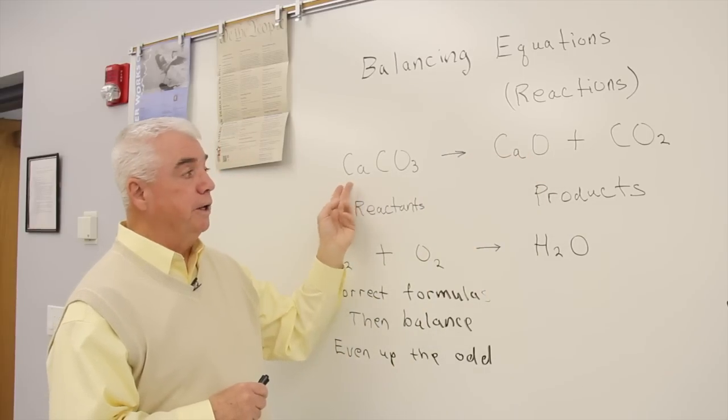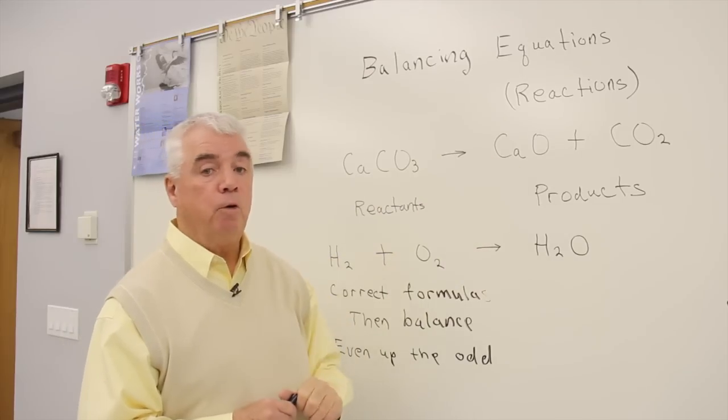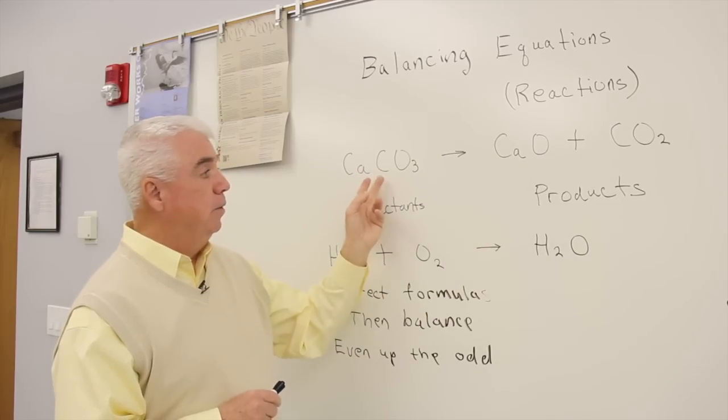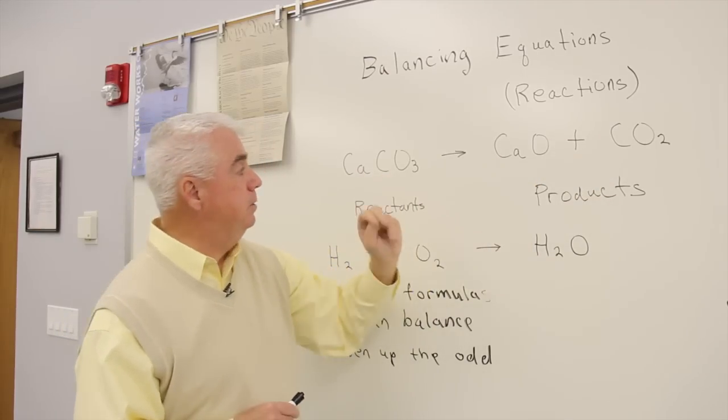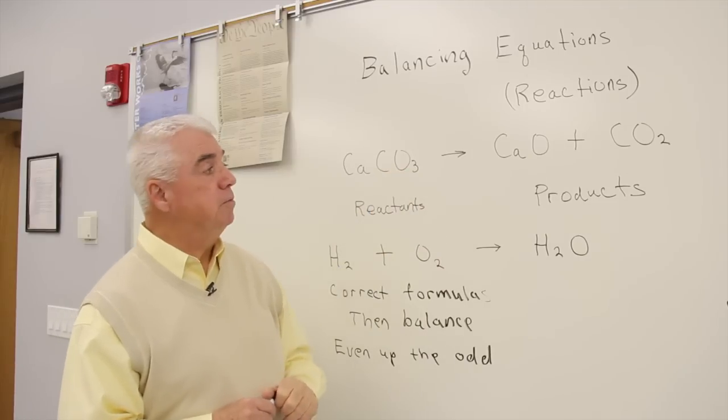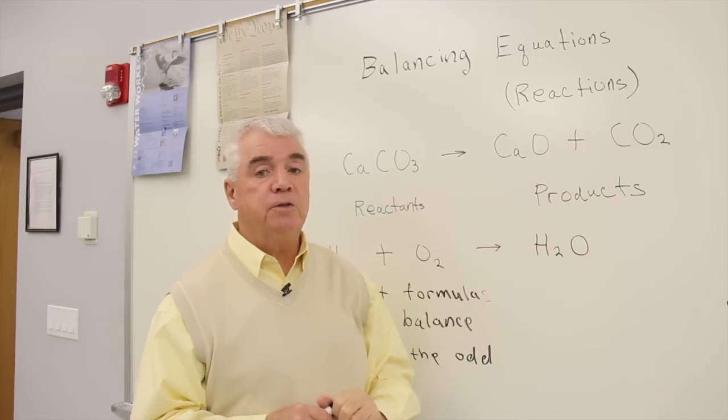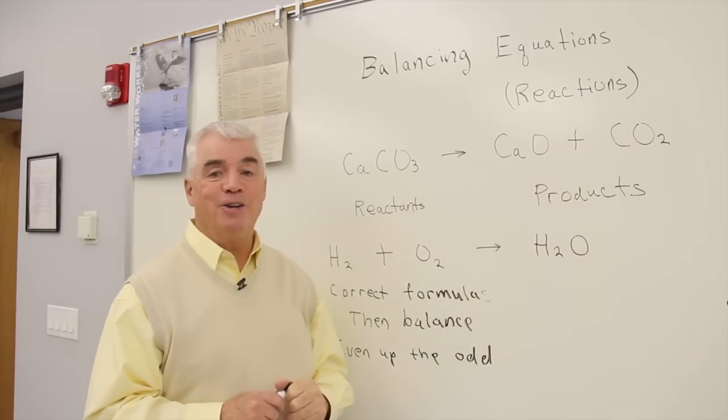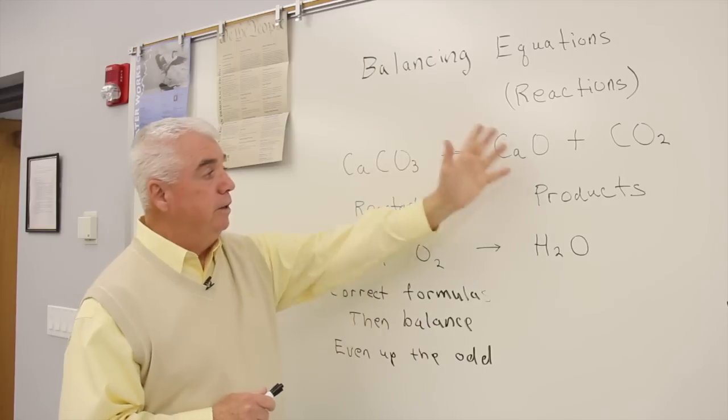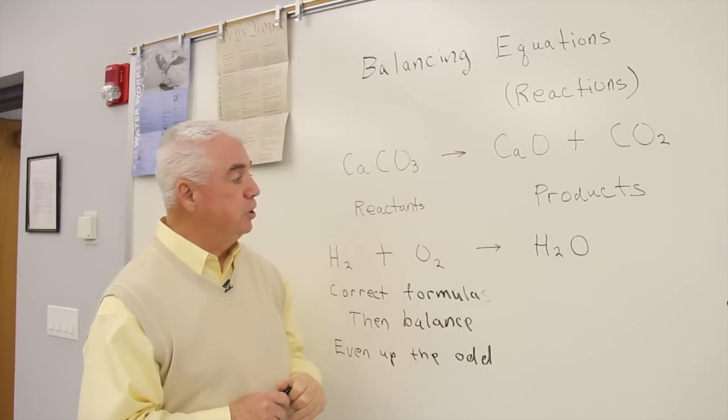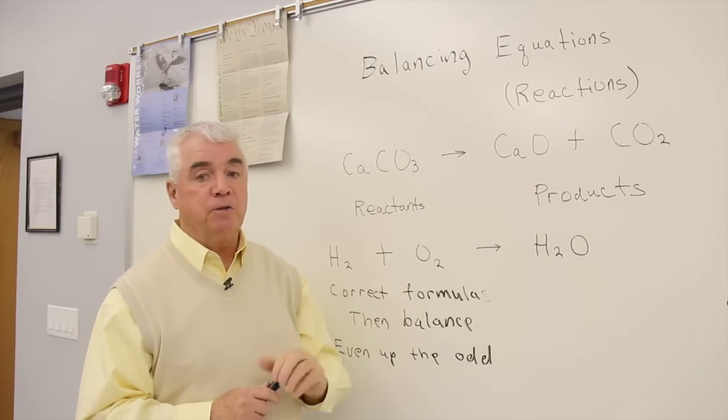For example, here's one calcium, one calcium over on the right-hand side, one carbon, one carbon, three oxygens. Over here we have one oxygen and two oxygens. So we have three oxygens on each side. When that situation is achieved, we say that the reaction is balanced.